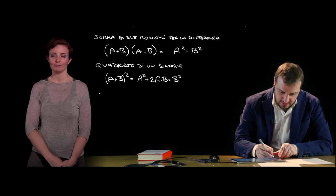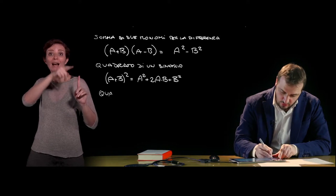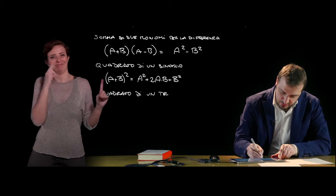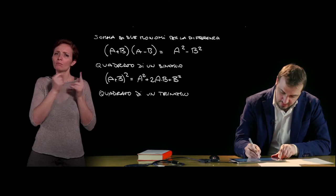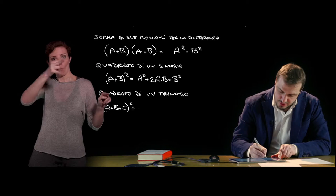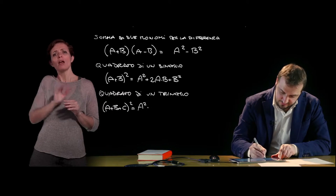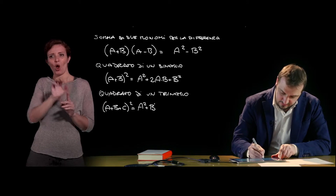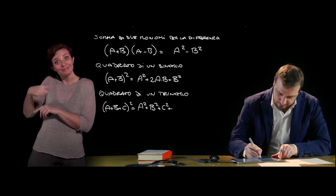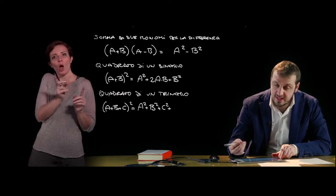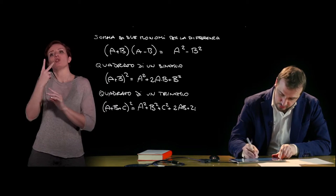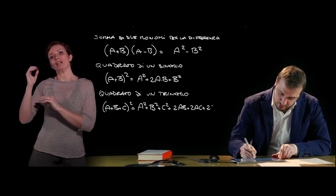We then have the square of a trinomial, (a + b + c)², which is another notable product. It is constituted by the three squares of the three monomials, to which we add the various double products of each term with every term that follows it. So we have the double product of a and b, the double product of a and c, and the double product of b and c.